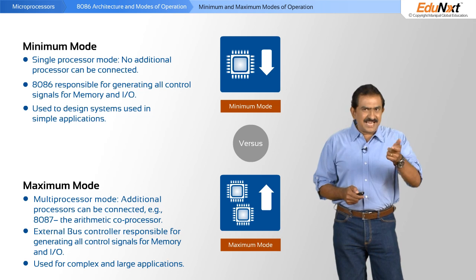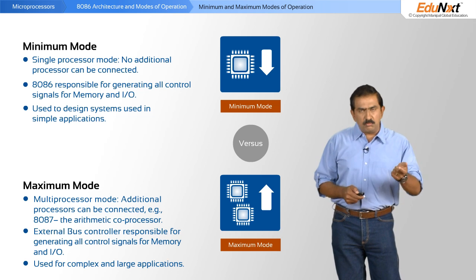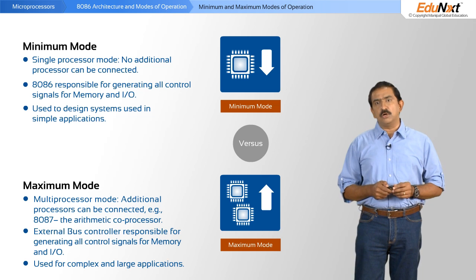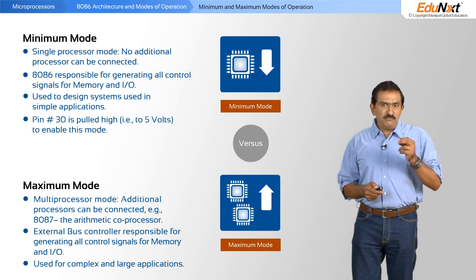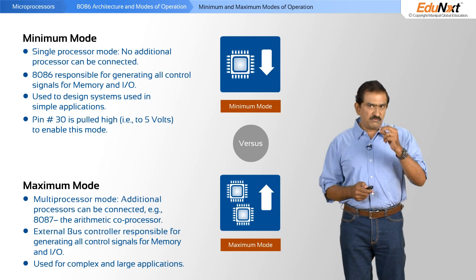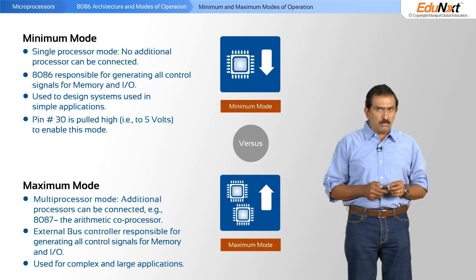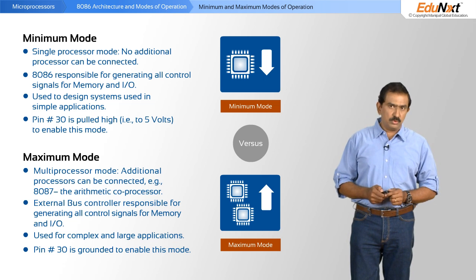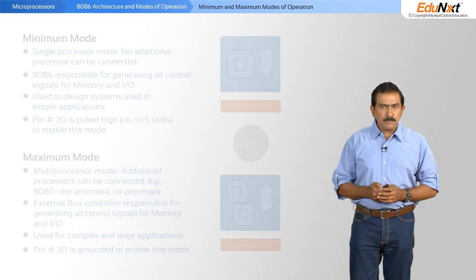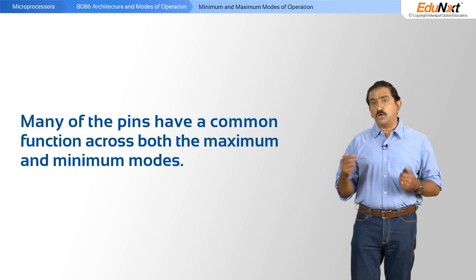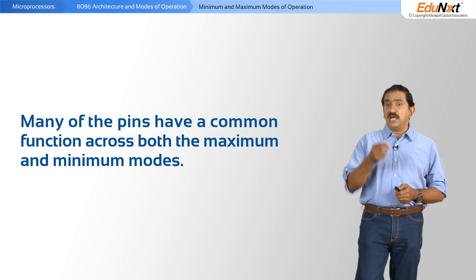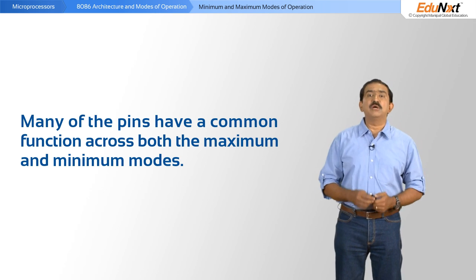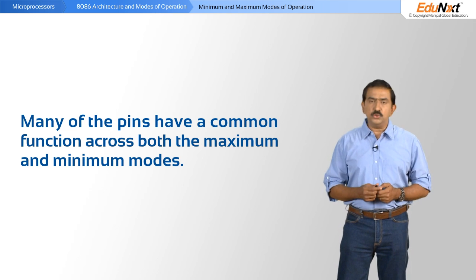The mode is determined by pin number 30 on the processor. If you pull pin 30 high to 5 volts, you enable the minimum mode; if you pull it low to ground, you enable the maximum mode. Many pins have a common function across both modes, and by studying the pin-out diagrams of the 8086 you will begin to appreciate what those pins are and where you would use them.